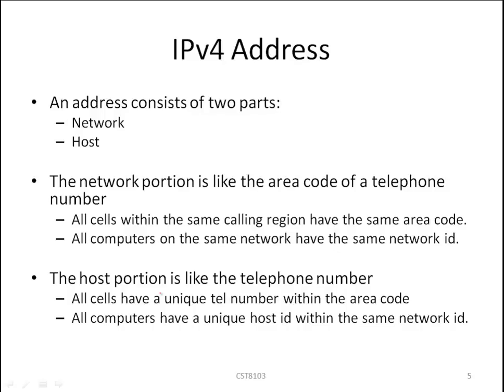An IP address consists of two parts: the network and host portions. The network portion is like the area code of a telephone number — all cells within the same calling region have the same area code. Likewise, all computers on the same network have the same network ID. The host portion is like the telephone number itself; all cells have a unique telephone number within the area code. Likewise, all computers have a unique host ID within the same network ID.